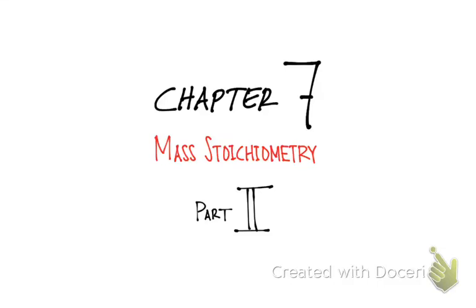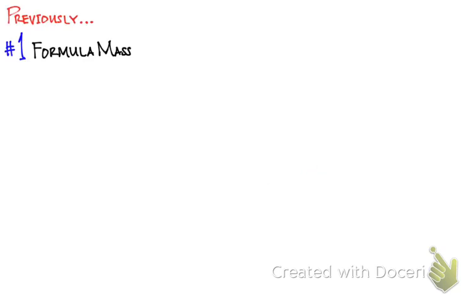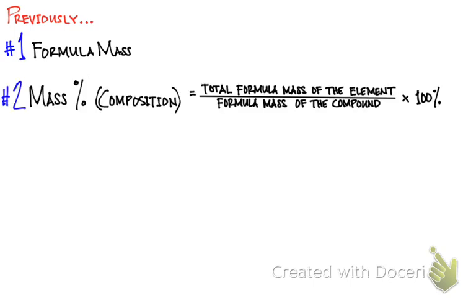Hello everyone and welcome to another episode of chemistry. Today's lesson is a continuation of chapter 7, mass stoichiometry. Last time you learned what formula mass is and how it can be calculated — formula mass is the sum of the atomic masses of all the elements within a compound. You also learned how to determine percent composition by mass of an element in a compound.